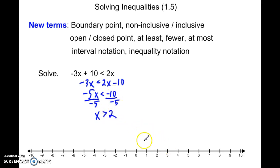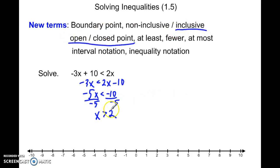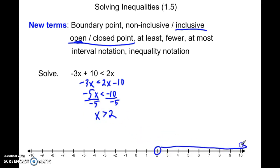So my graph here, I'm going to put an open circle at 2. We talk about inclusive points or closed points — the solutions x are bigger than 2, not equal to 2, so this is going to be an open point at 2. The x values of the solutions are larger than 2, so the graph looks something like that. This is called a boundary point.